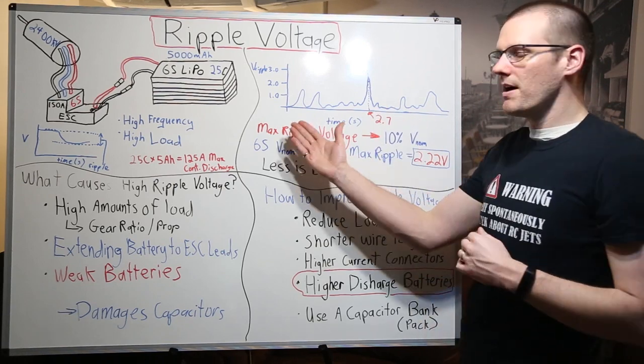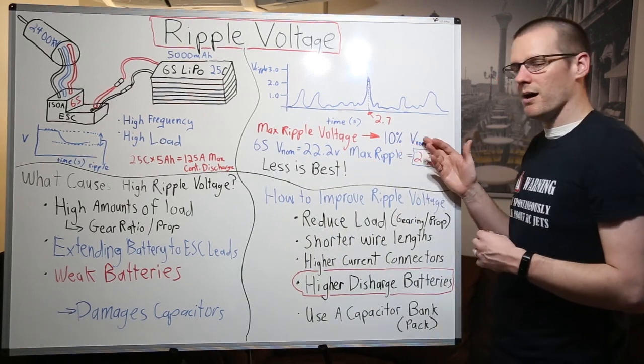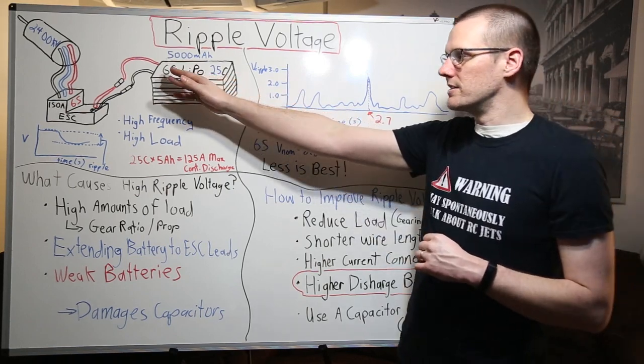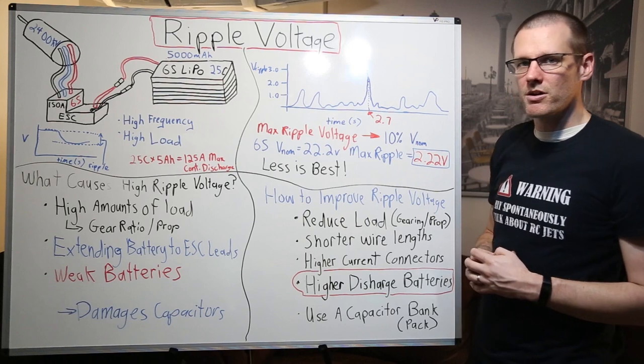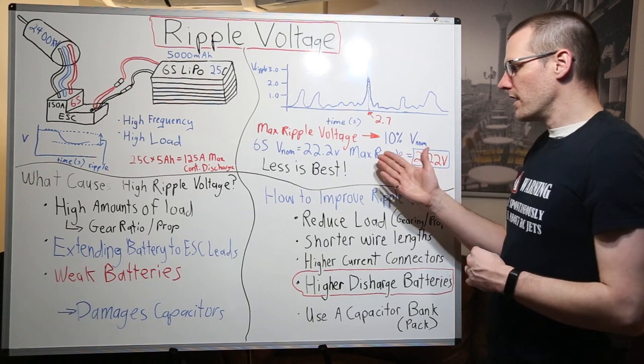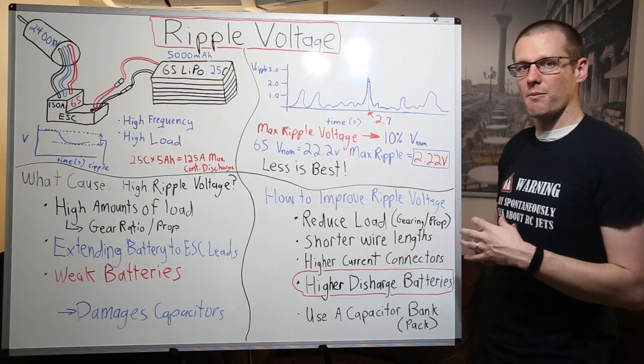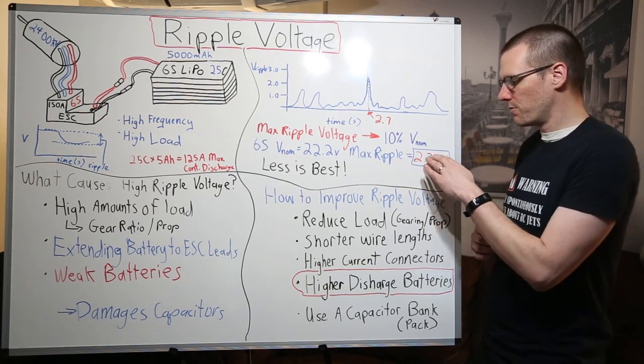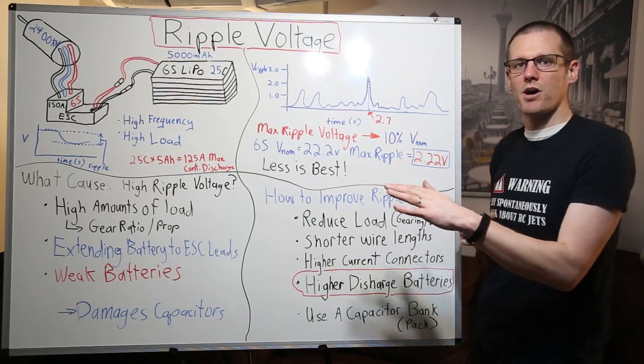So what does this mean? Well, the maximum ripple voltage that we should have within our system is 10% of the nominal voltage that is known as VNOM here. If we look at our power system here, we are using a six cell lithium polymer battery pack. We go ahead and figure out our nominal voltage of our battery pack, and we get 22.2 volts for our 6s lipo. We then look at what the maximum ripple voltage is for this example, we move the decimal place one spot over, and then we get 2.22 volts by taking our 10%. The 2.22 volts is the maximum ripple voltage that we should see in our power system throughout an entire run.